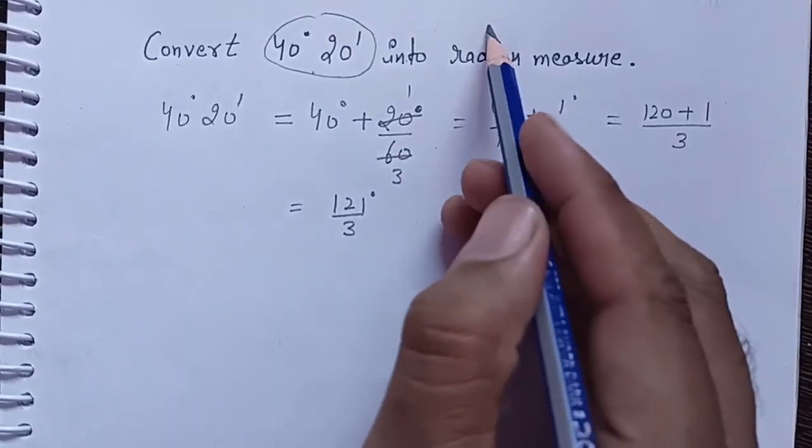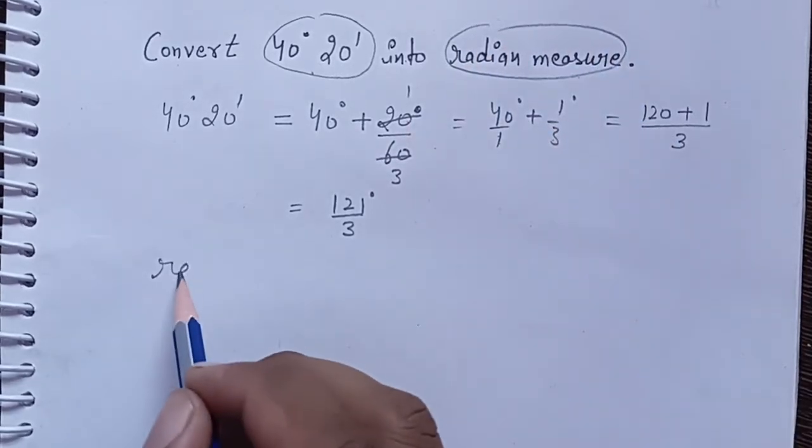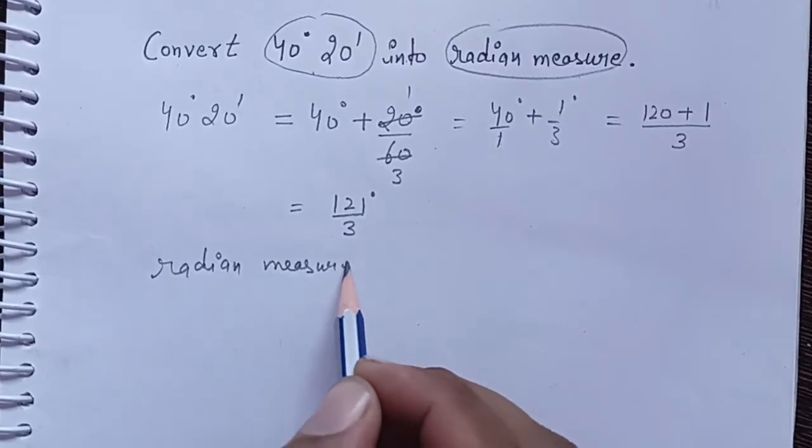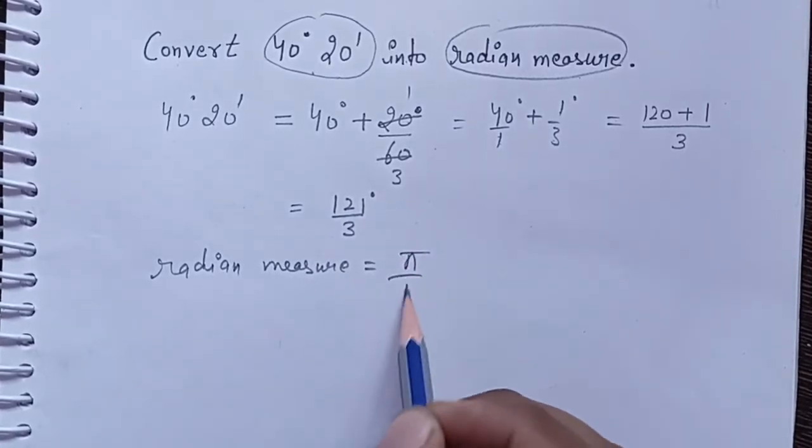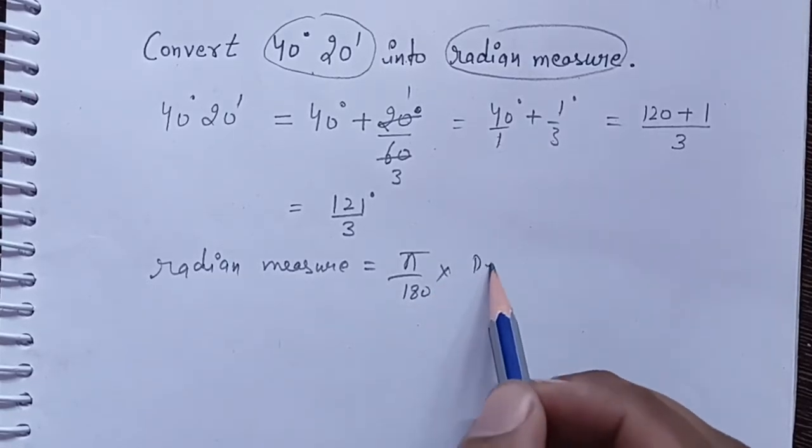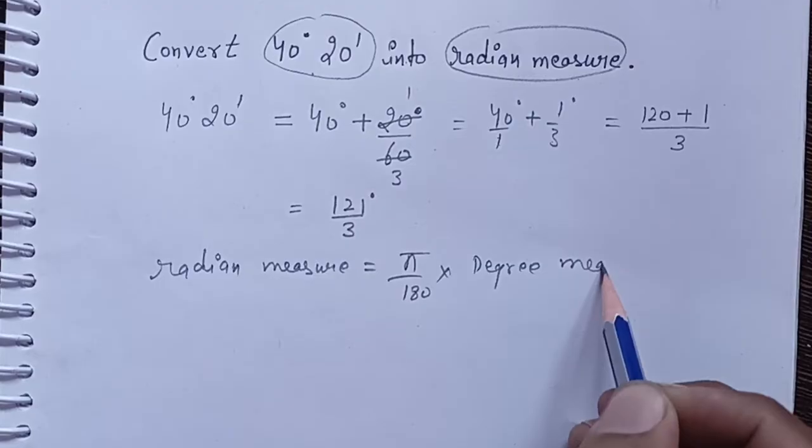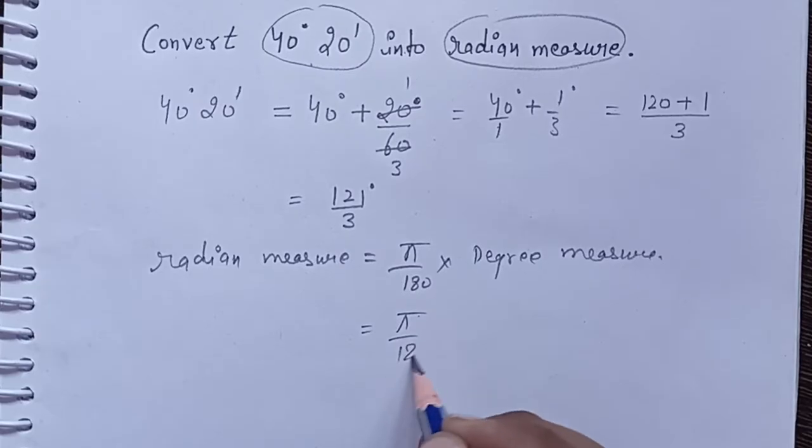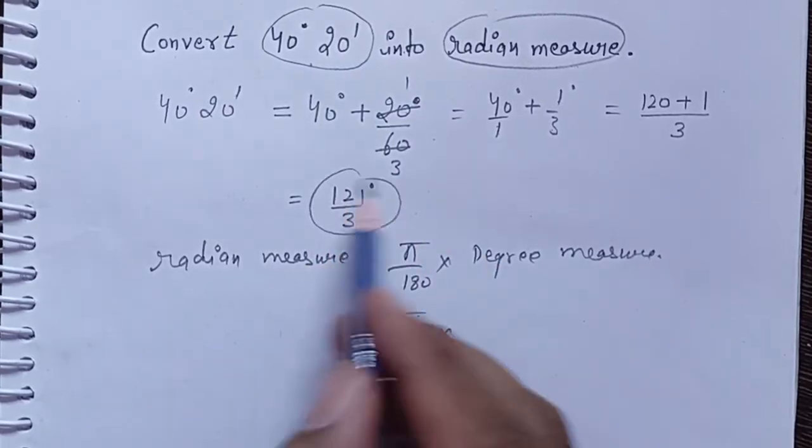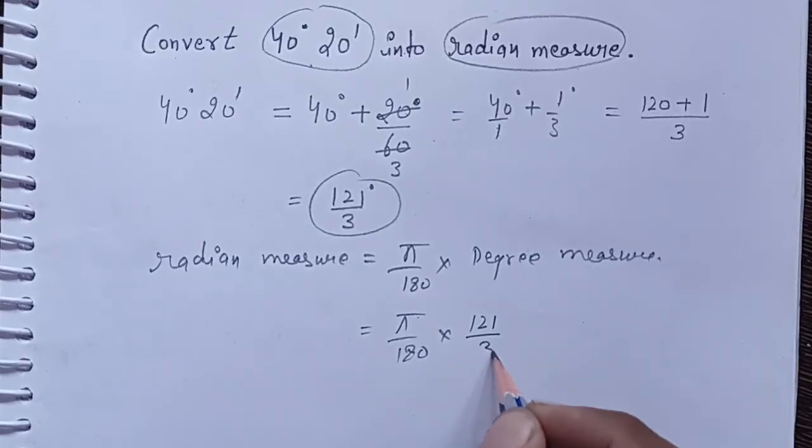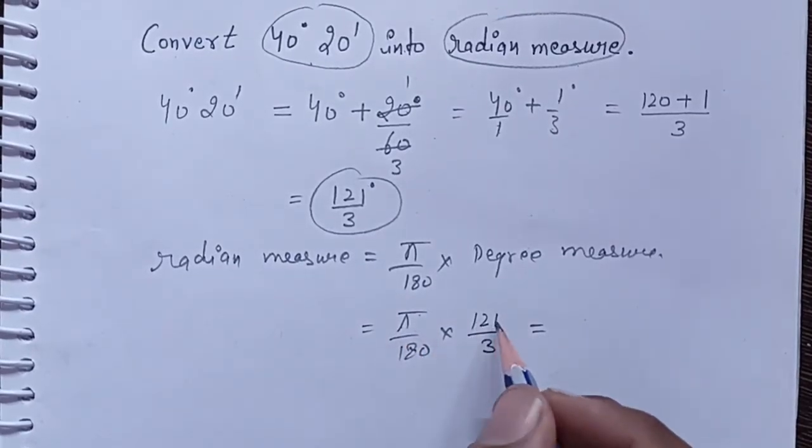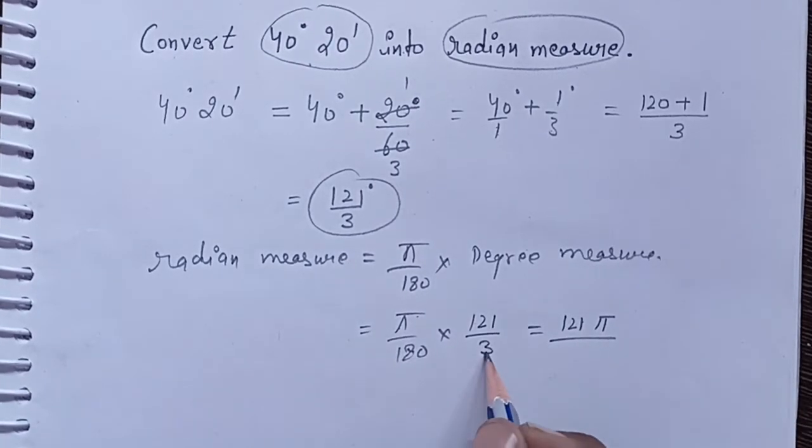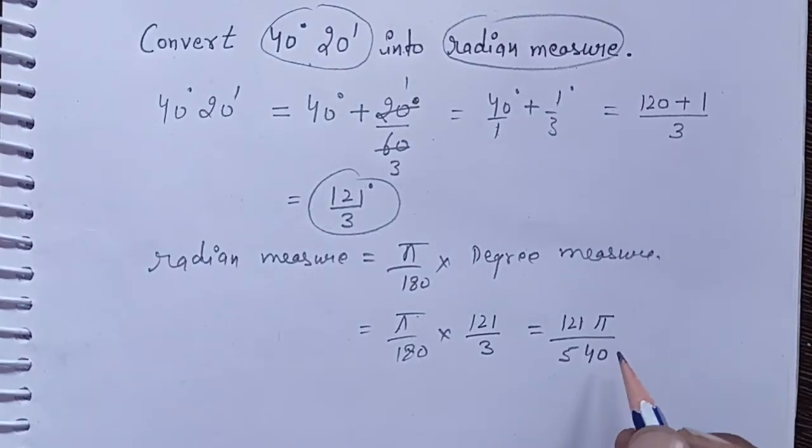Apply the formula: radian measure equals π/180 times degree measure. So π/180 times 121 divided by 3, π times 121 is 121π divided by 180 times 3, which is 540. So our answer is 121π divided by 540.